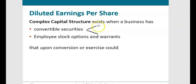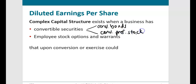There are two types of convertible securities: convertible bonds and convertible preferred stock, as well as employee stock options and warrants. We'll use options and warrants interchangeably because for our purposes they're basically the same thing. Upon conversion or exercise, these items could dilute earnings per share.